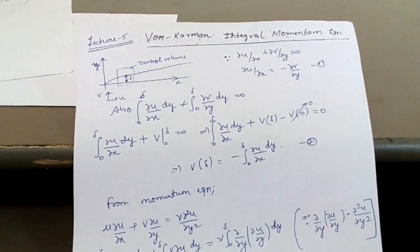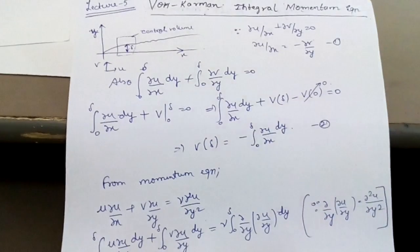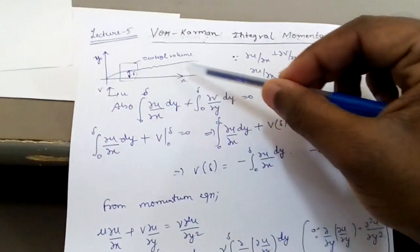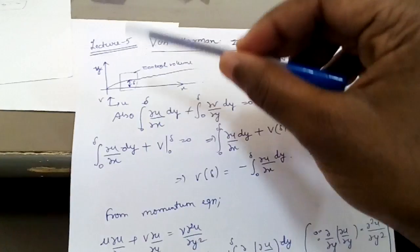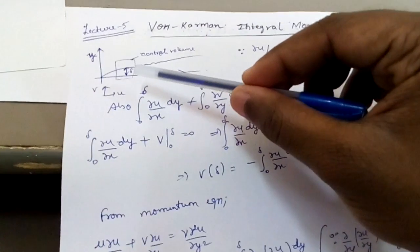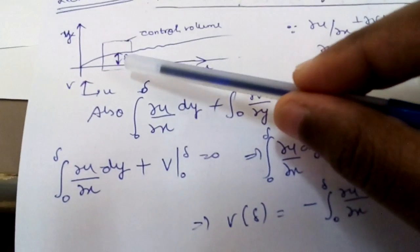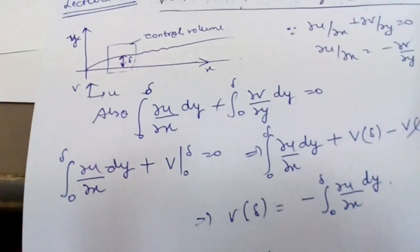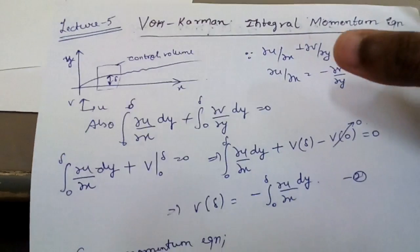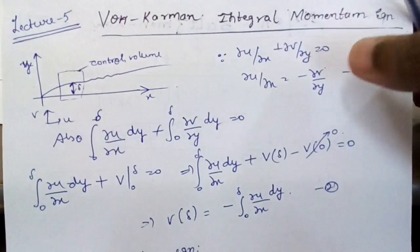How do we start? We start by taking a control volume. This is the boundary layer. Suppose this is the x direction and this is the y direction. Here is the boundary layer thickness, that is delta. Now, since you know that the continuity equation is: del u by del x plus del v by del y is equal to 0.